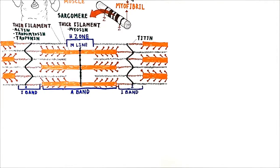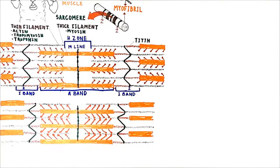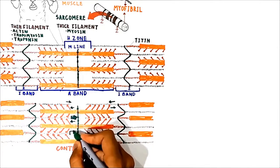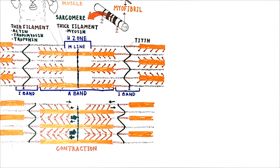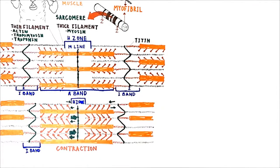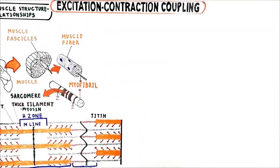The A band constitutes the length of the myosin on either side of the M line — myosin thick filaments are found in the dark A band. In a nutshell, contraction occurs when myosin binds to actin and pulls on the actin filament. Contraction causes shortening of the sarcomere, shortening of the I band and H zone, but no change in the length of the A band.